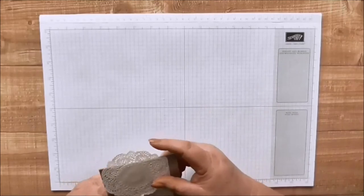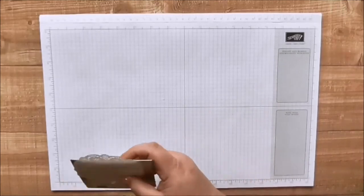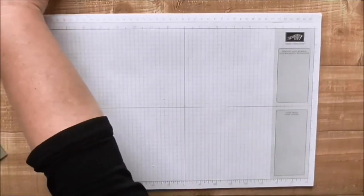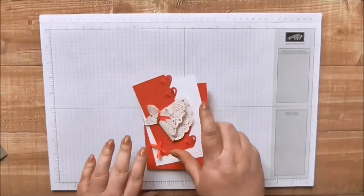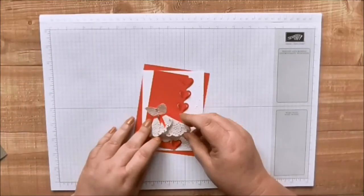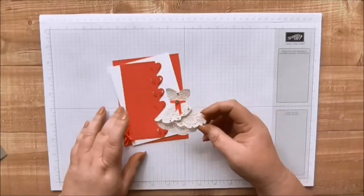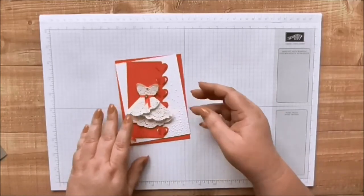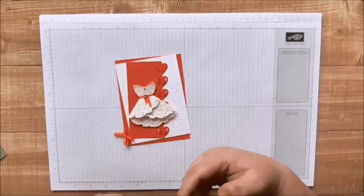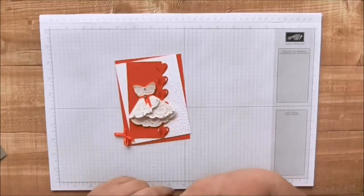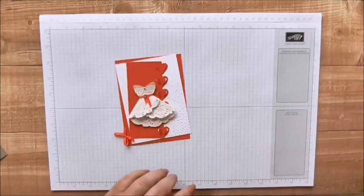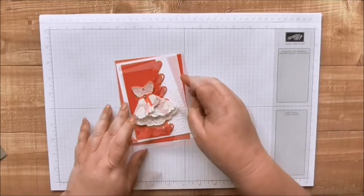The first one is going to be a card where we use the doily to make a little dress. Now this would be good for inviting someone to be a bridesmaid or for a wedding or for a prom card or anything, a pretty birthday card or something like that.